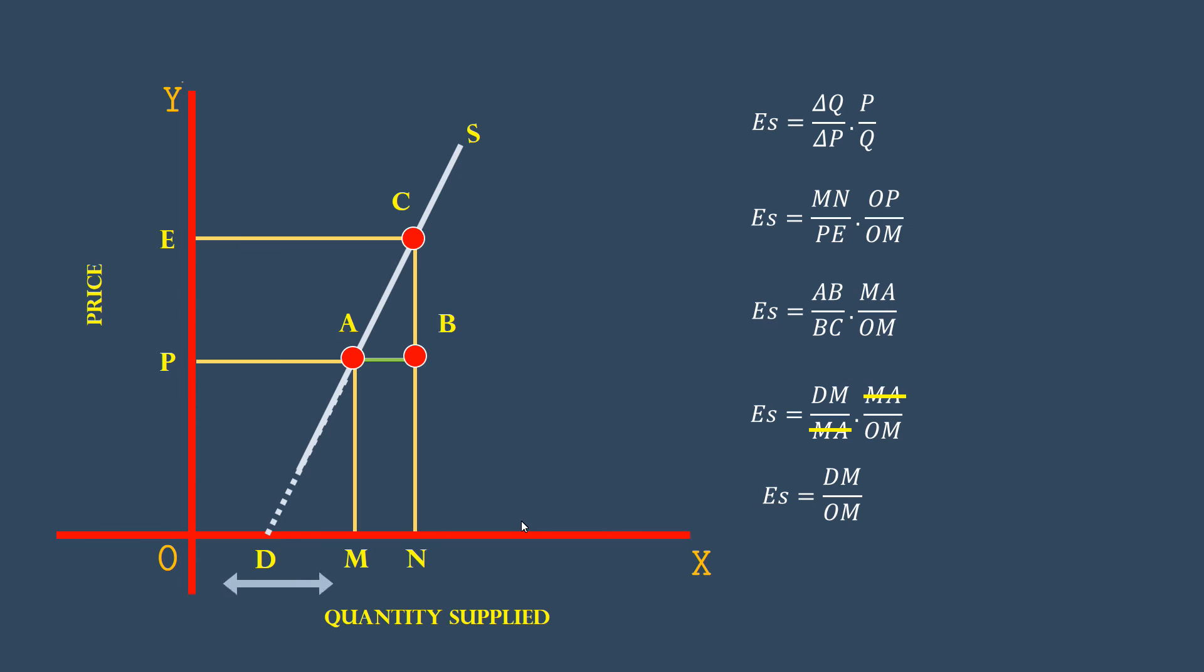Use the length of the segments OM and DM to find the elasticity of supply at any given point on the supply curve. In the graph, the length of DM is less than OM. Hence, DM over OM must be less than 1.